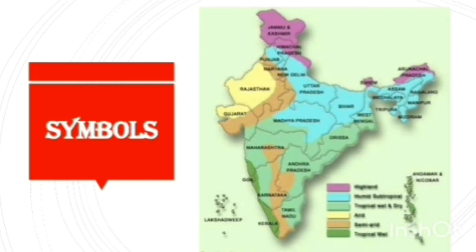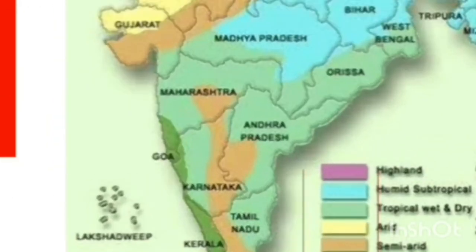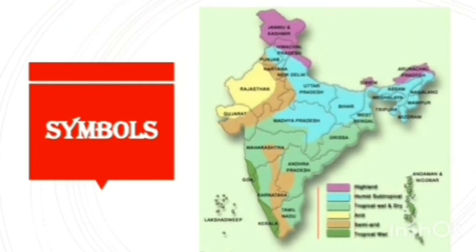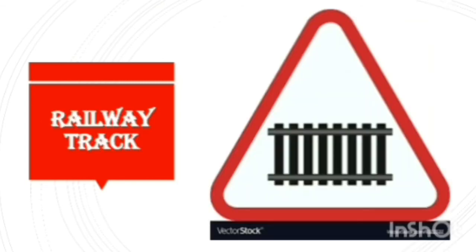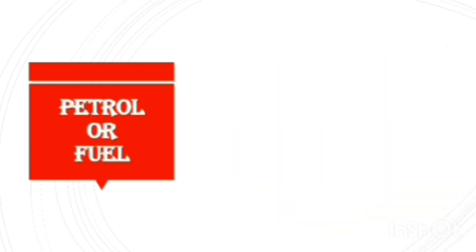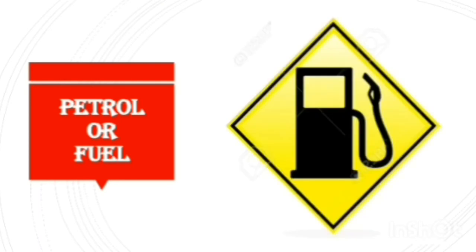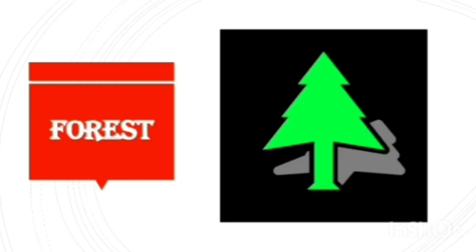Now, in this map, symbols are given as different colors. Now, let us see some common symbols used in maps: post office, hospital, railway track, restaurant, petrol or fuel, and forest.